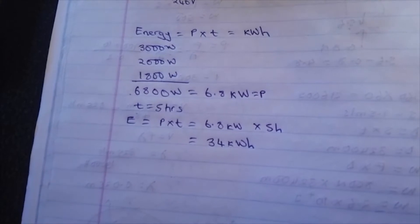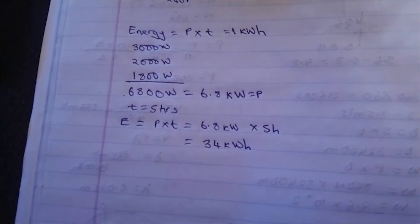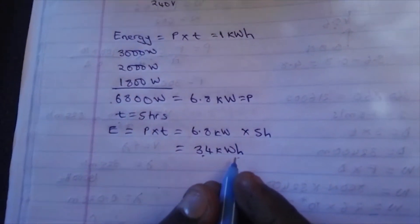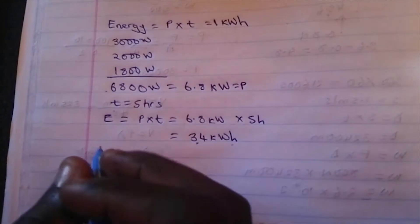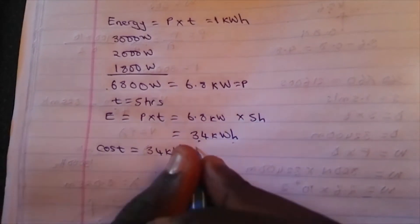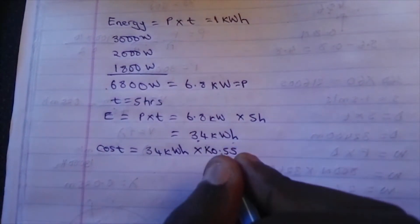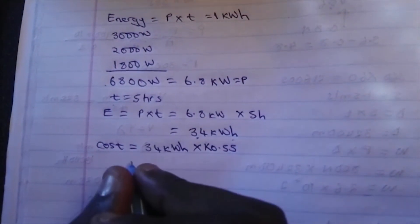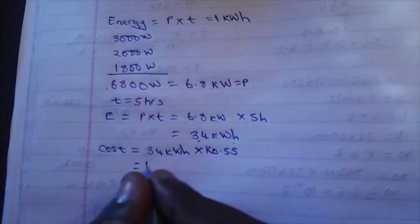One unit of electricity is equal to 1 kilowatt hour. So 1 unit costs 0.55 kwacha, which is 55 ngwe. We multiply by 0.55 kwacha to calculate the cost. Cost is equal to 34 kilowatt hours times 0.55 kwacha, because 55 ngwe is the same as 0.55 kwacha — we have 100 ngwe equal to 1 kwacha. So the cost will be equal to 34 times 0.55.